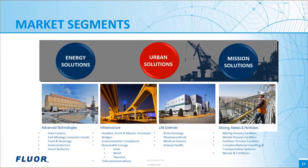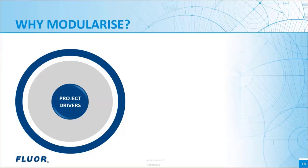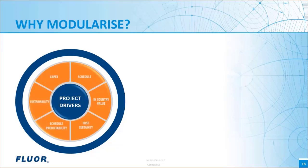Intelligently applied, modularization can offer solutions that improve sustainability and drive down both cost and schedule in almost any situation where the right conditions exist. To be successful, the drivers for modularization must exist and the module solution must be matched to meet those drivers. In order to match the modularization programme to the needs of the project, it is essential to first understand the strategic drivers, goals, and objectives. There are many possible drivers, including schedule, in-country value, cost certainty, schedule predictability, sustainability, and cost, amongst many others.